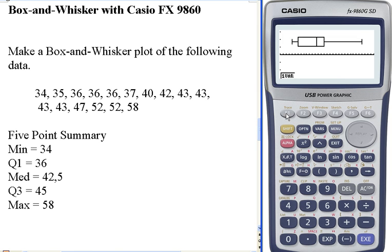And there's my box and whisker plot. This point here is the minimum, 34. This point is 36, Q1. This is our median, 42.5. This is 45, our Q3. And way up here is our maximum.